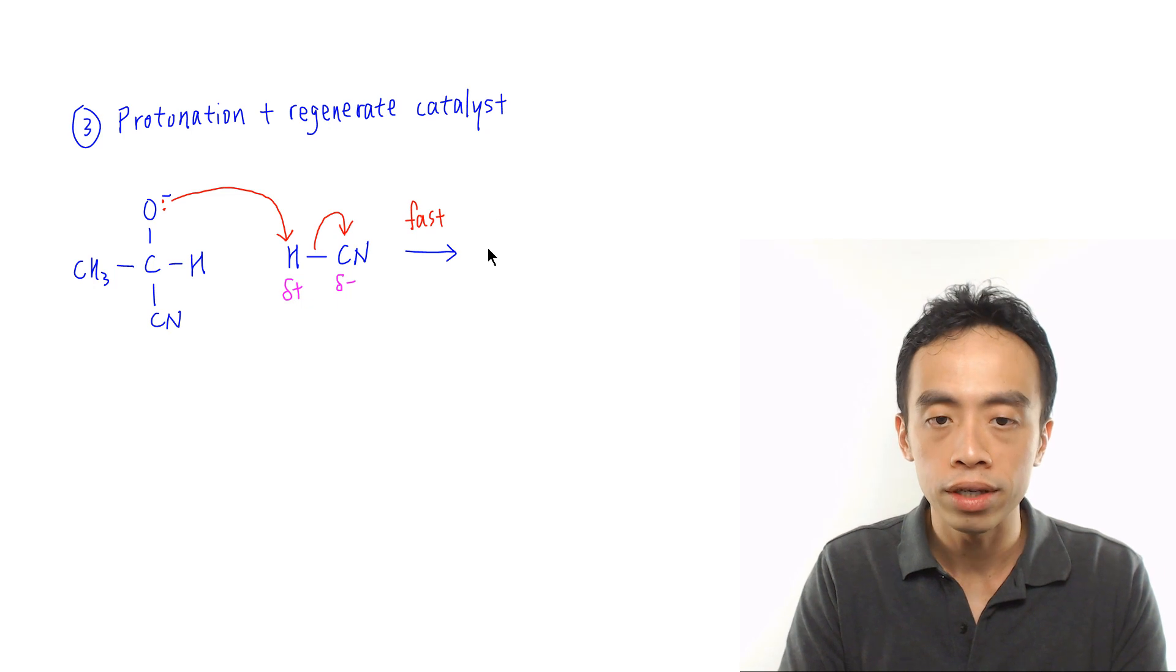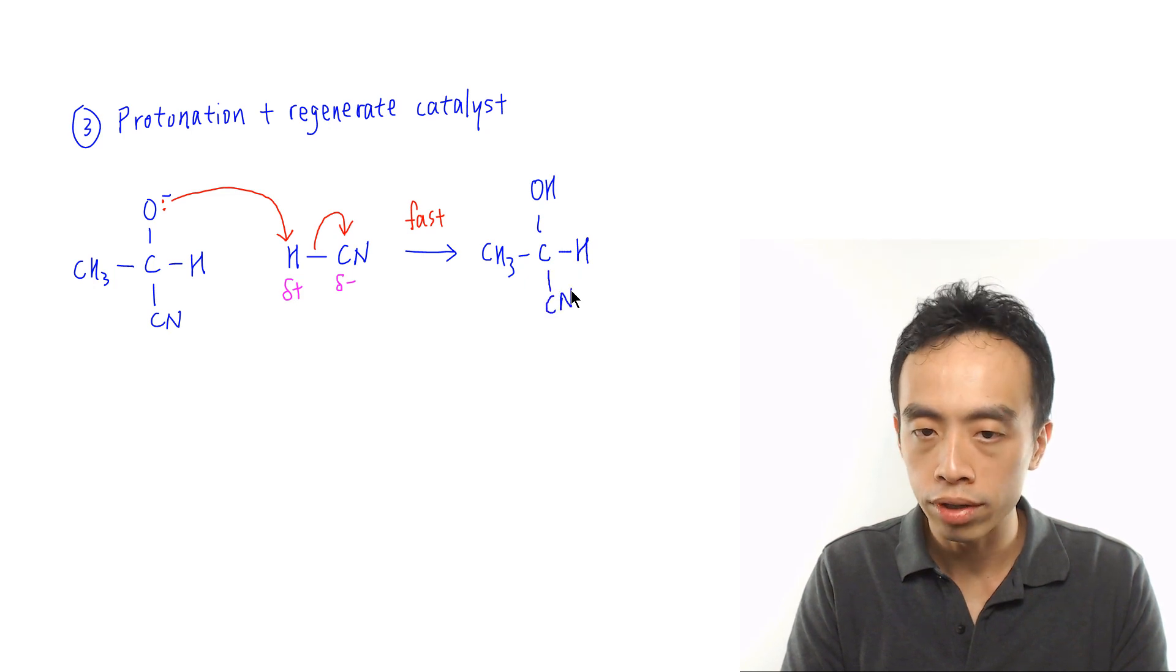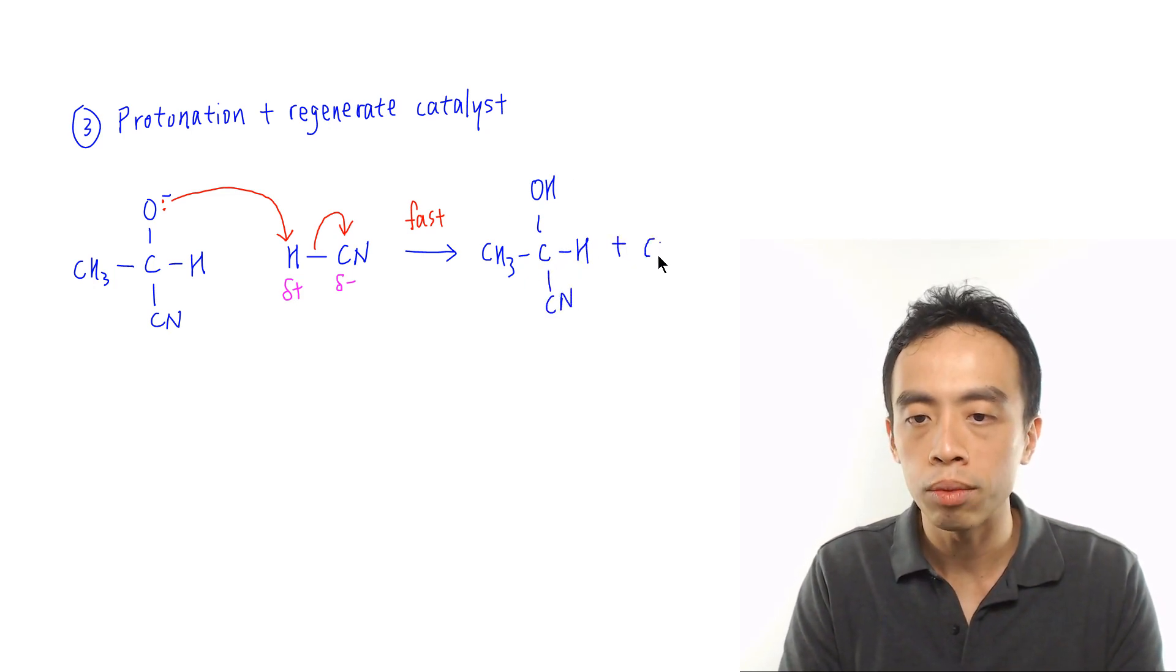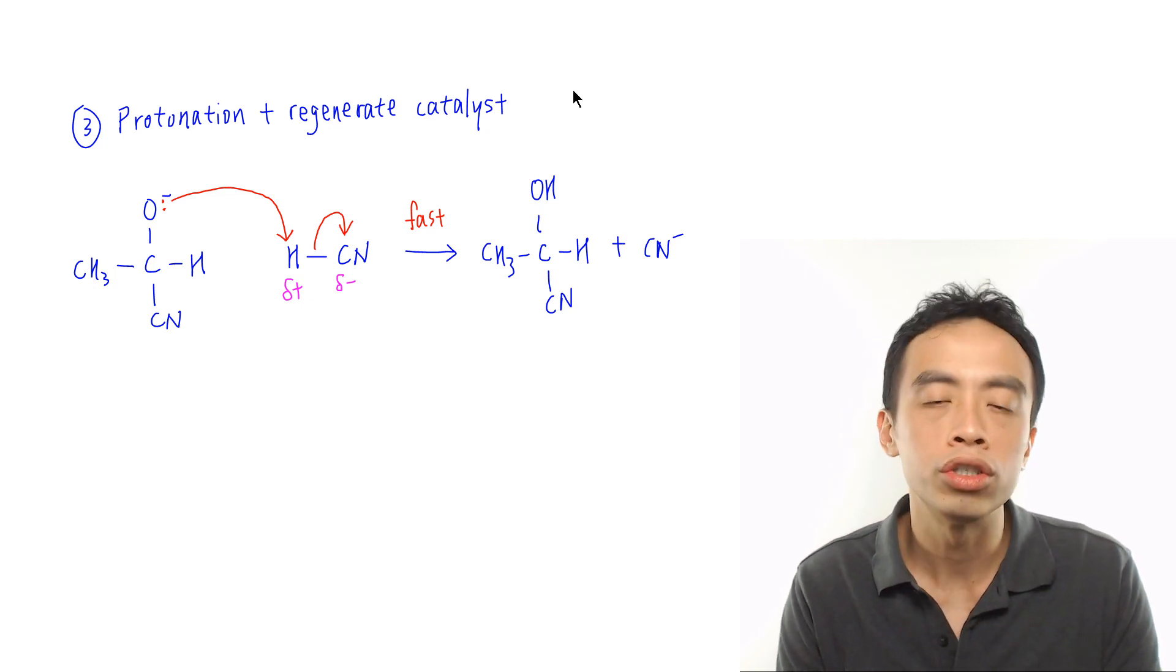The product that I'll end up having will be CH₃, a carbon with an OH group, a hydrogen, the nitrile is here. This is the product cyanohydrin, and we'll end up with a CN⁻, which is the catalyst that is being regenerated.